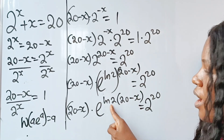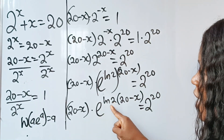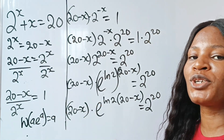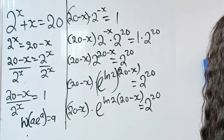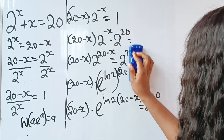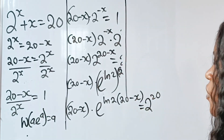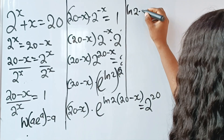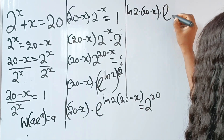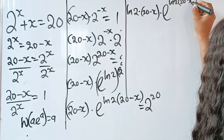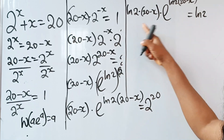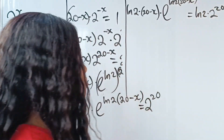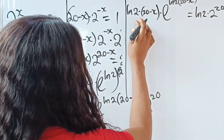We have (20 minus x) here and (20 minus x) in the exponent, but we have ln(2) in the exponent so it's not yet in the required form. We need to multiply through by ln(2) to introduce ln(2) to the coefficient side as well, so that we can apply the Lambert W function. So we multiply through by ln(2): we get ln(2) · (20 minus x) multiplied by e to the power of ln(2) · (20 minus x), equal to ln(2) · 2 to the power of 20.